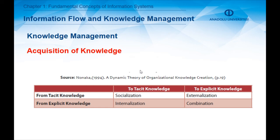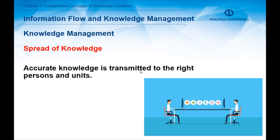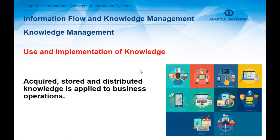Combination is the transformation of explicit knowledge to explicit knowledge — that is, transferring explicit knowledge from one platform to another. In the third step, we store the knowledge. After we acquire knowledge, in order to use it again, it must be preserved in the enterprise database. The fourth step is the spread or distribution of knowledge, where accurate knowledge is transmitted to the necessary units and persons. Finally, after acquiring and sharing knowledge with the right persons and units, we use and implement it in business operations.